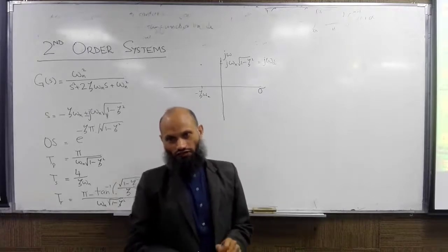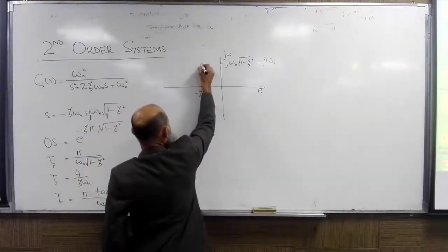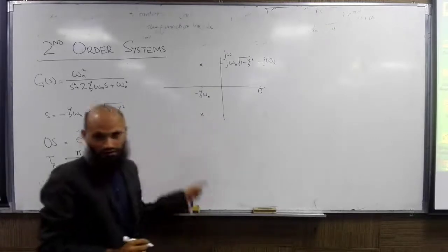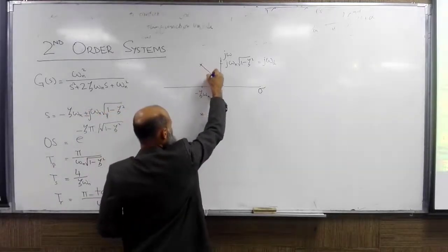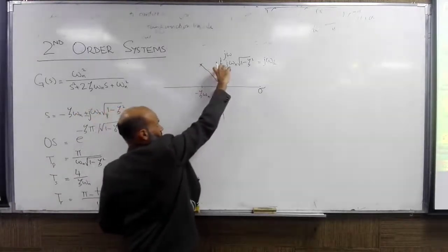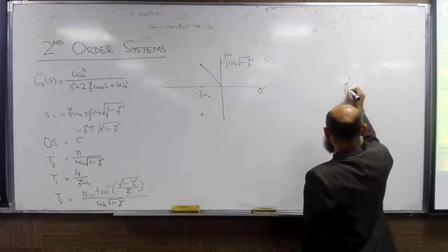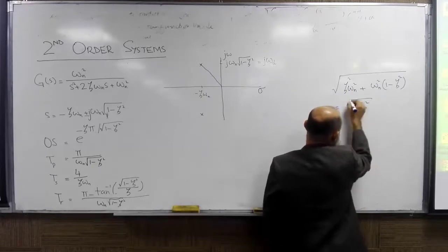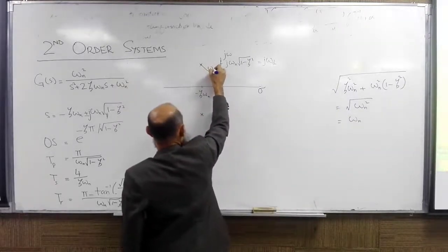There is natural frequency of oscillation and damped frequency of oscillation. If one pole is at a given location, the other pole must necessarily be at its complex conjugate. The length of the vector from the origin to the pole — computed as the square root of the sum of the squares of the real and imaginary parts — equals omega_n. So this length is omega_n.